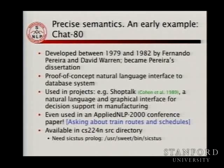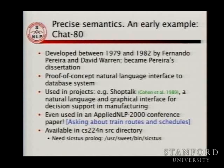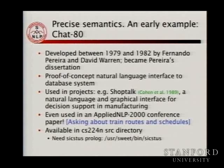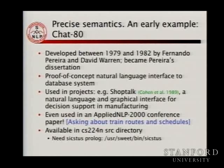Fernando Pereira is these days a well-known machine learning and probabilistic NLP researcher — he was one of the people centrally involved in conditional random fields, and he's working at Google. But way back in 1980, Fernando Pereira was working on his PhD dissertation on a Prolog system he called CHAT-80. Its goal was to do full natural language understanding in a restricted domain so it could do question answering. It was one of the very well-known systems of that era, with a surprising longevity of usage.